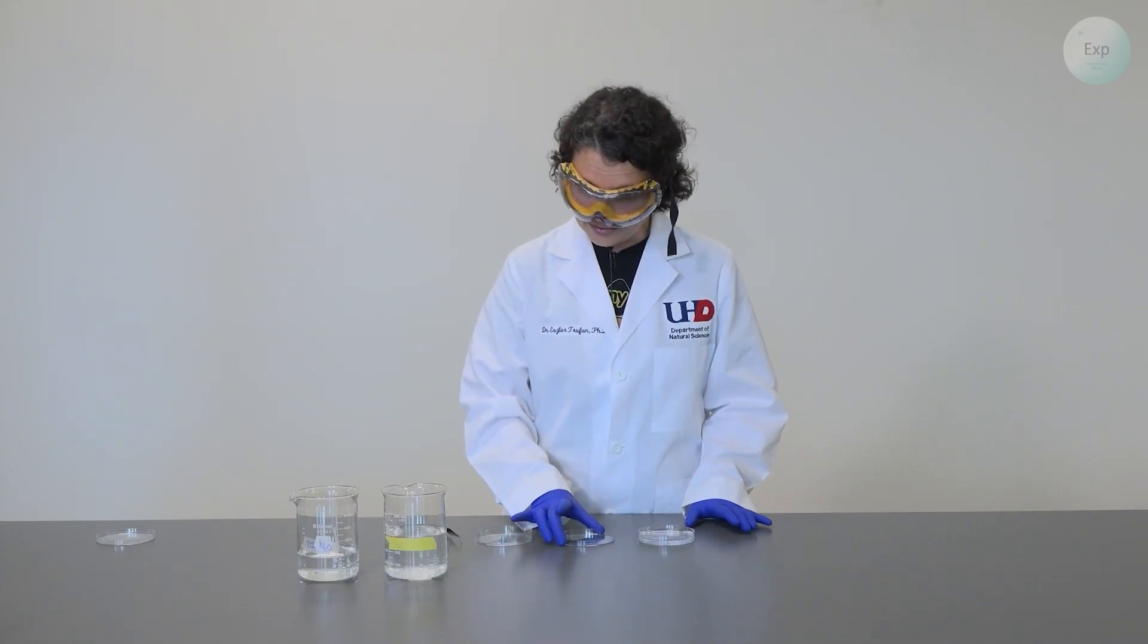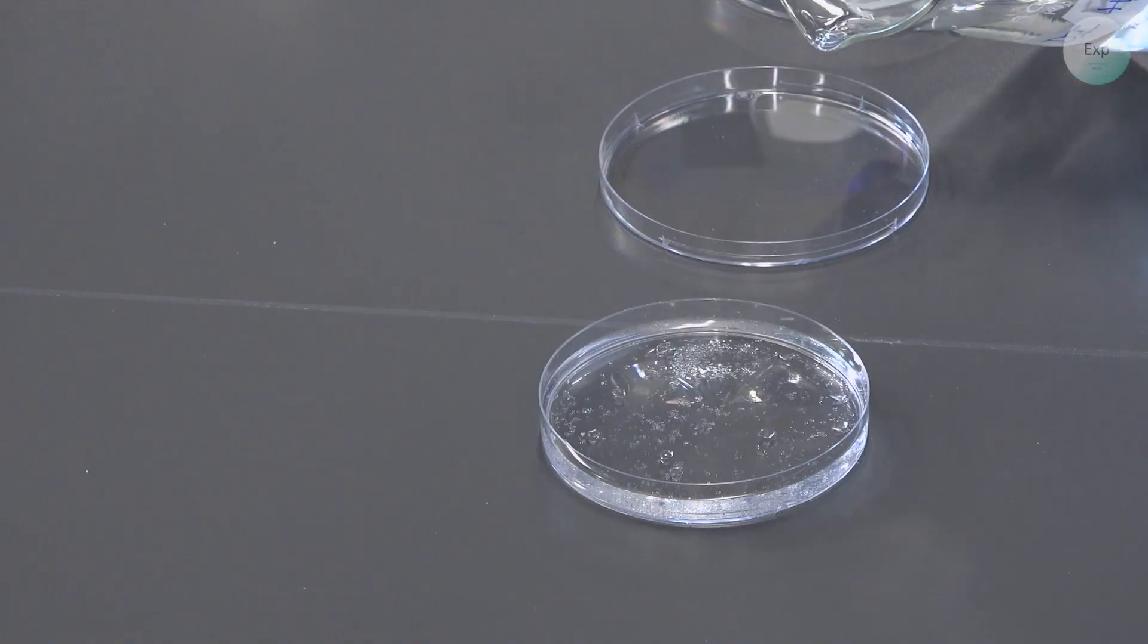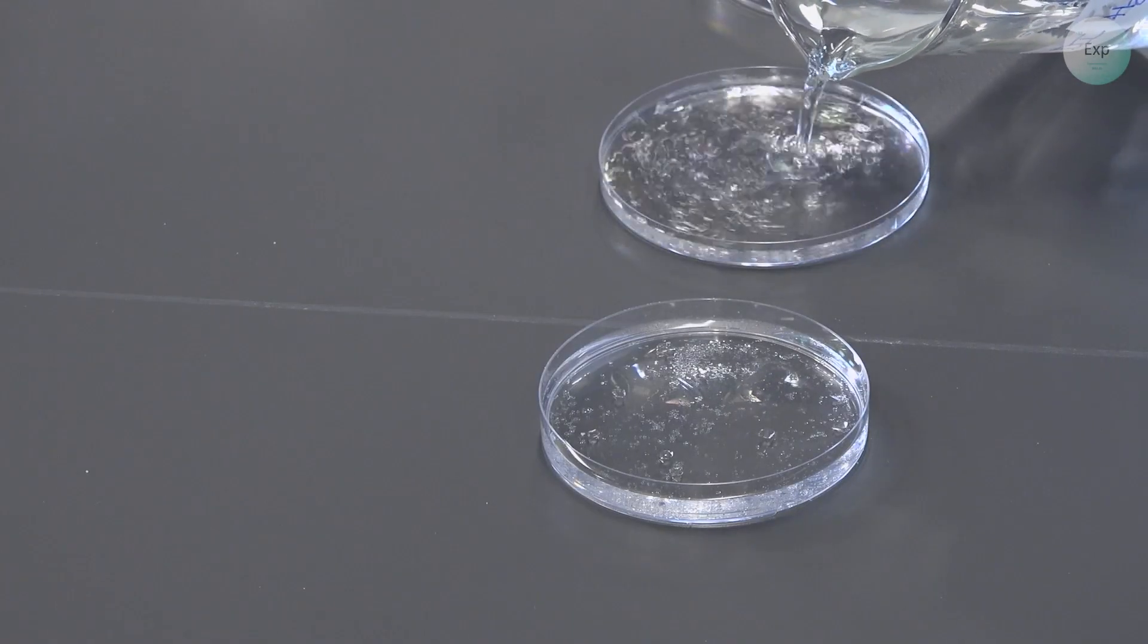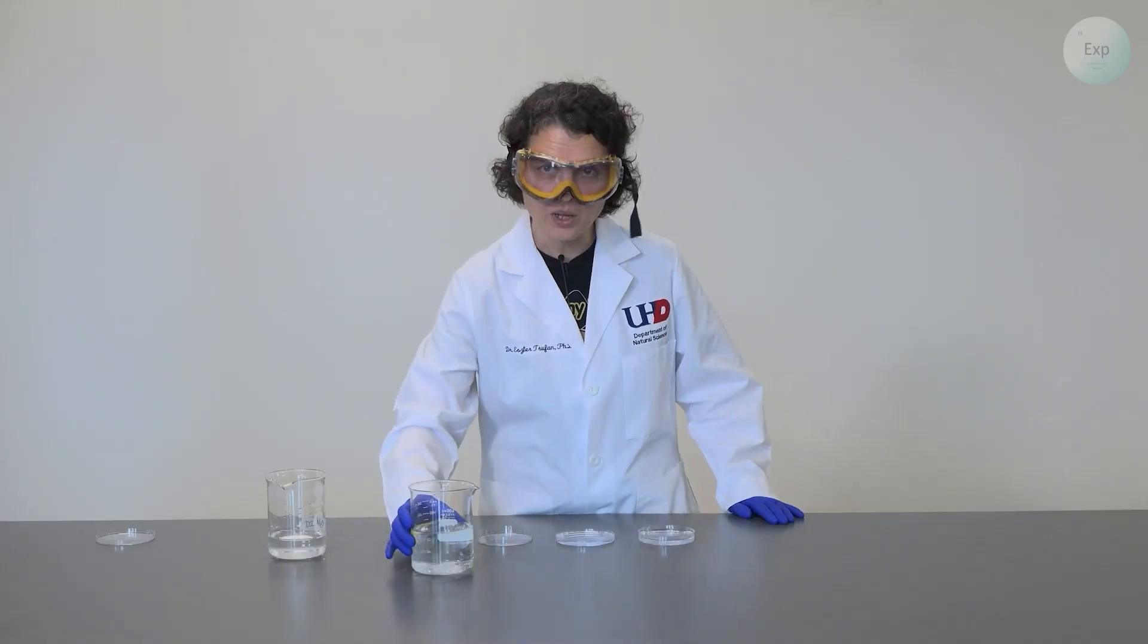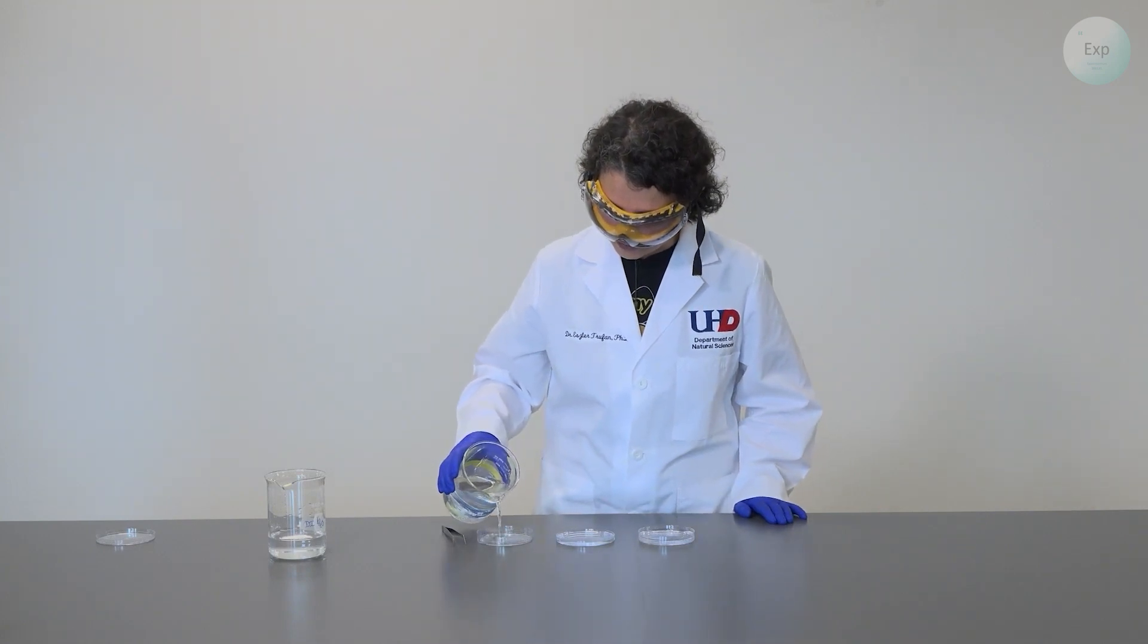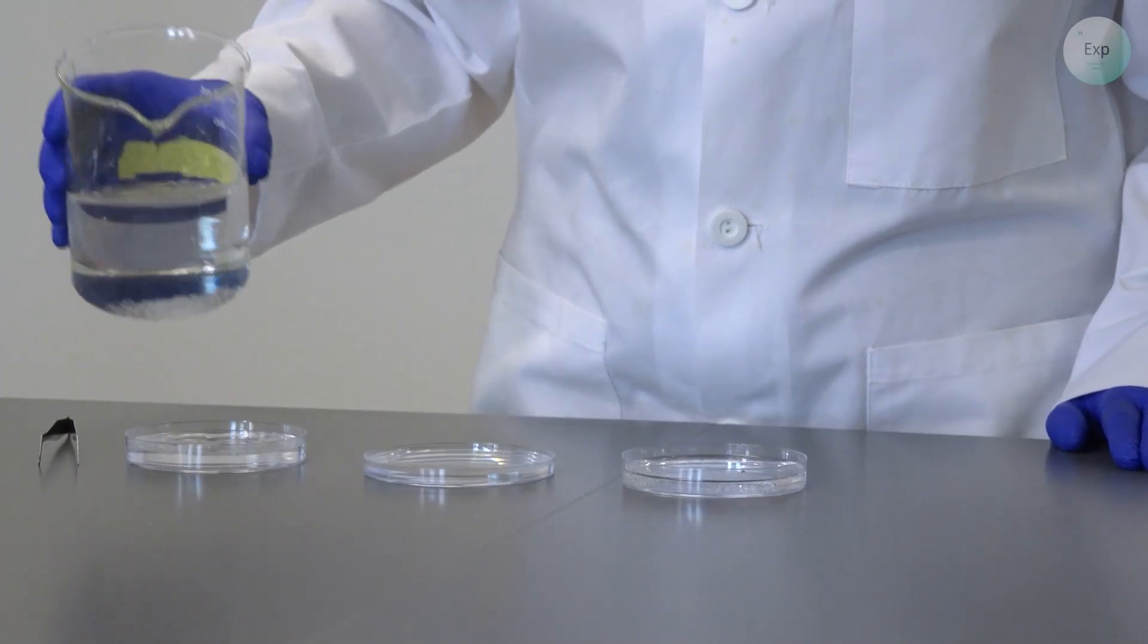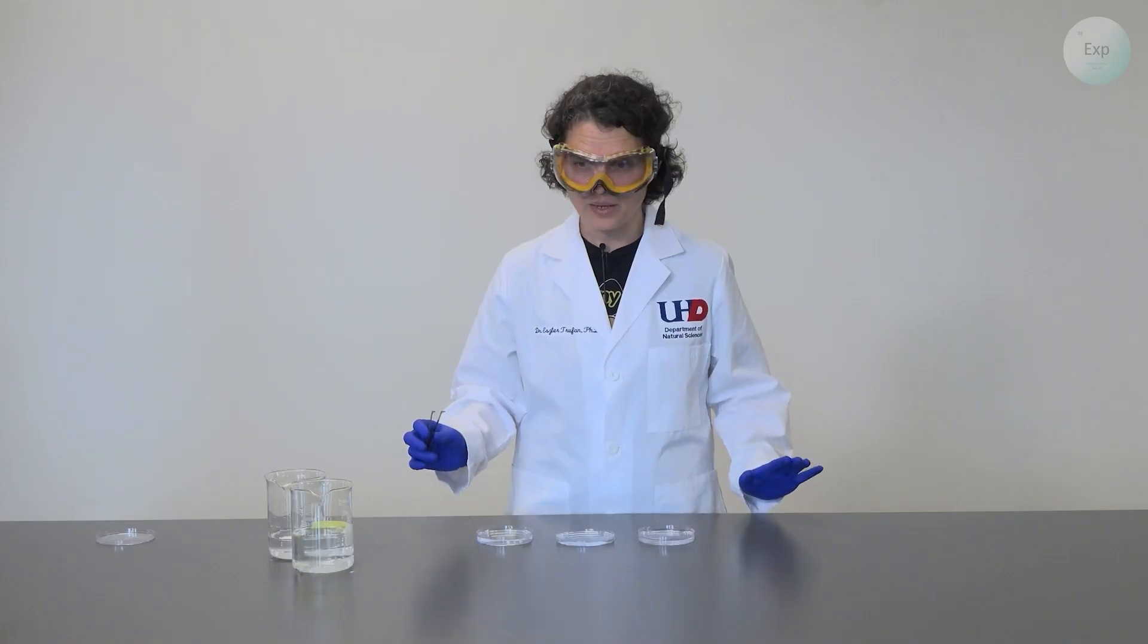In the lid of my second petri dish, I will pour a small amount of water so that it covers the bottom completely. This will help me rinse my solution. And then in the base of my second petri dish, I will pour some of my saturated alum solution. And now I am ready.